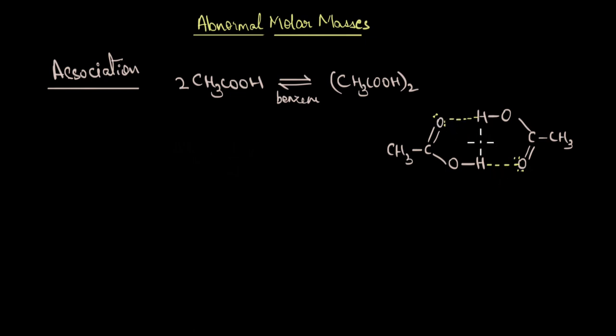The dotted lines that you see here are the hydrogen bonds formed between the acetic acid molecules. If all the acetic acid molecules associate or combine to form a dimer like this, then in the solution we have only half the number of the solute particles, because two acetic acid molecules combine to give one dimer. That means the increase in the boiling point would also be half of what we would normally expect.